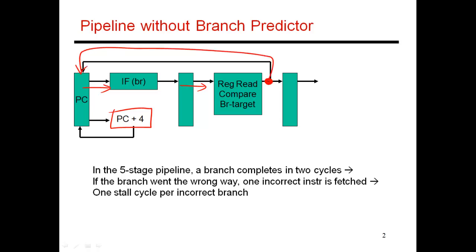And that then goes back and updates the PC, so that in the third cycle I can start fetching the correct instruction. In the meantime, I have fetched the next sequential instruction in the second cycle, and that has to be squashed. So in our earlier basic five-stage pipeline, there was a one-cycle penalty every time the branch was being taken, because I was making the default assumption that I was going to fetch the next sequential instruction.